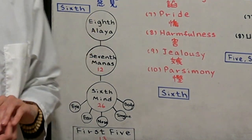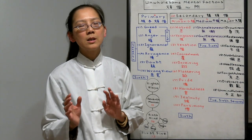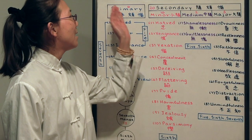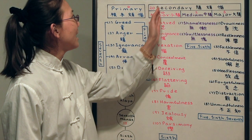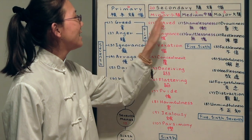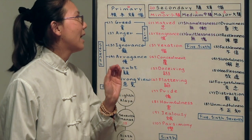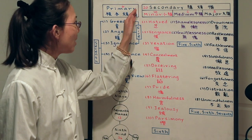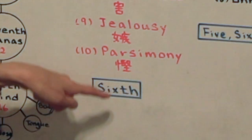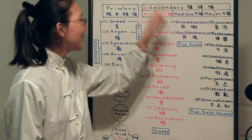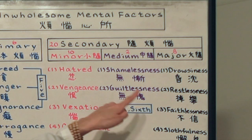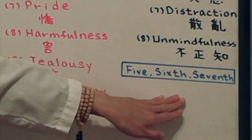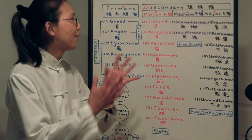The eighth alaya consciousness, it doesn't create karma. So it's not wholesome or unwholesome. It's a big storehouse. It stores everything as karmic seeds. As you can see, the minor, medium, major, secondary, unwholesome mental factors. These are not based on the severity of the affliction. They are based on the range of function in the eight consciousnesses. The minor one is called minor, because it's only working in the sixth consciousness. The medium one is called medium, because it's in the first five consciousness, and the sixth consciousness. And the major one is called major, because it's in the first five, and the sixth consciousness, and the seventh consciousness. Therefore, the range is bigger, that's why it's called major.